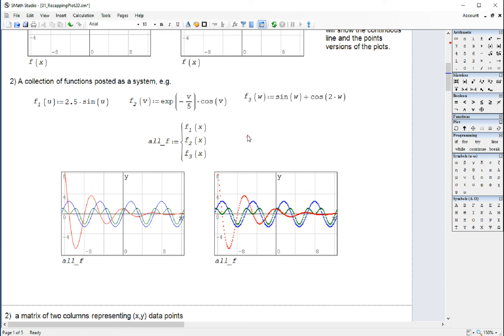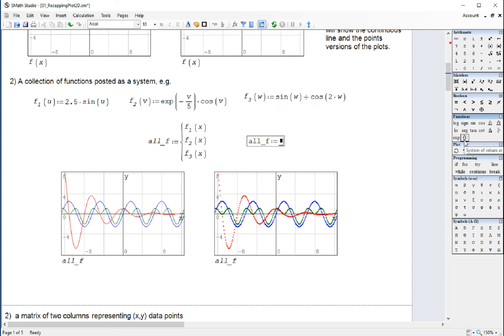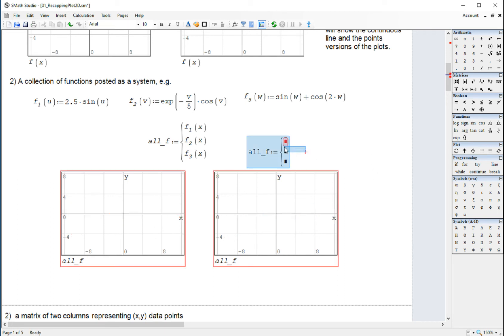You will type, for example, all under sign f, colon, and then go in here into the functions palette and click on system. We need three, so we put a comma there. We put a comma, then it will give you an additional point.